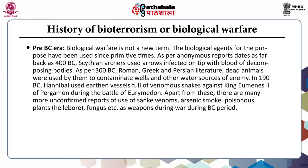In 190 BC, Hannibal used earthen vessels full of venomous snakes against King Eumenes of Pergamon during the Battle of Eurymedon. Apart from these, there are many more reports of use of snake venom, arsenic smoke, poisonous plants, fungus, etc. as weapons during the BC period.